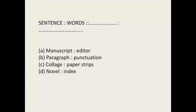Now you have to find the analogy: sentence and words. A sentence is formed of words — find a similar pair. Manuscript: an editor has to edit it, but that's not the same structure. Paragraph is not only formed of punctuation. Collage is formed of paper strips — yes. Novel and index are not the same relationship. So the right answer is collage and paper strips, because sentence is formed of words and collage is formed of paper strips.